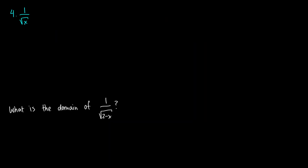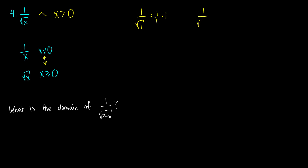Now, what if we combine both restrictions: 1 over the square root of x? If we remember, 1 over x says x cannot be 0, and the square root of x says x has to be greater than or equal to 0. Combining both rules, x has to be strictly greater than 0. For example, 1 over the square root of 1 is fine — that's just 1 over 1, which is 1. But 1 over the square root of 0 gives 1 over 0, which is not good. So x must be greater than 0.